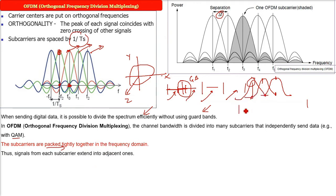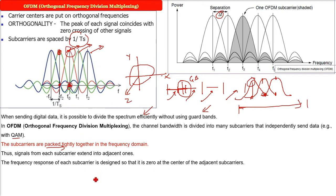So these signals or the signal from each sub-carrier extend into adjacent ones. That is, one frequency, you can say one wave, the other will be contributing, you will see they are crossing each other. So the frequency response of each sub-carrier is designed so that it's zero at the center of the adjacent sub-carrier. Other will be at zero and one will be peaking.